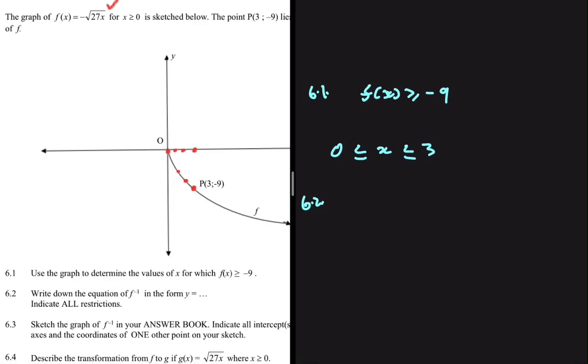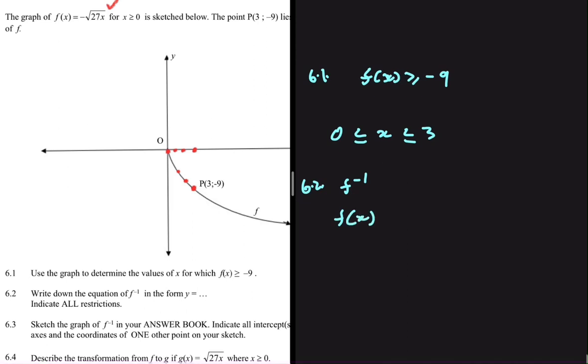Write down the equation of f inverse in the form y equals to. Indicate all restrictions. So f of x, we know at this point that it is equals to minus the square root of 27x. To find the inverse, we need to swap x and y.